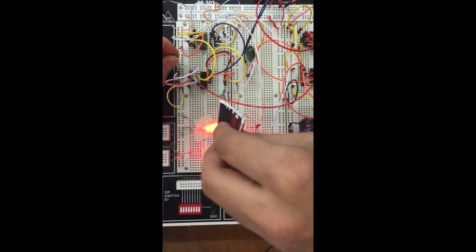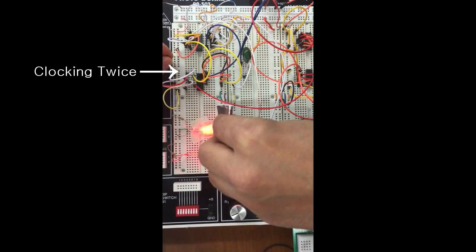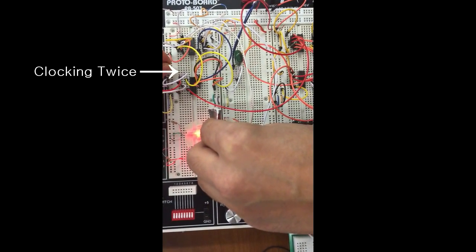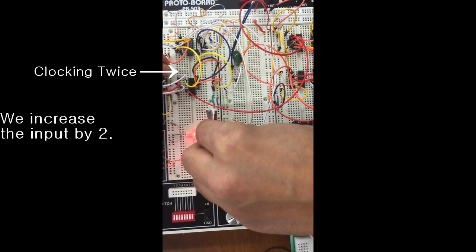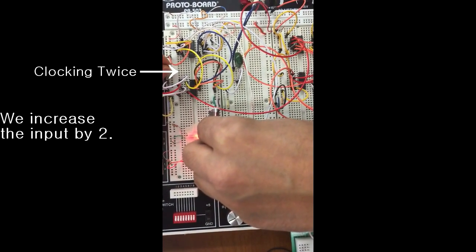I will block the LEDs again and clock it twice this time. After clocking twice the count of the counter should have gone up by 2.